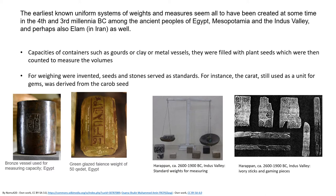The earliest known uniform systems of weights and measures seem to have been created around the same time, during the fourth to third millennia BC, among ancient peoples of Egypt, Mesopotamia, and the Indus Valley civilization, and perhaps also at Elam in Iran. Capacities of containers such as clay or metal vessels filled with plant seeds and counted as measured volumes for weighing were invented. Seeds and stones served as standards — for instance, the carat, still used as a unit for gems, was derived from the carob seed.